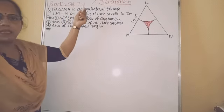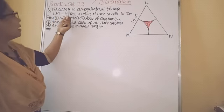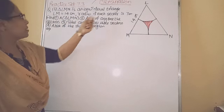Practice set 7.3, last question number 30. Triangle LMN is an equilateral triangle.